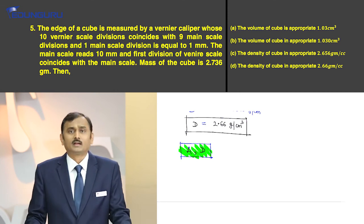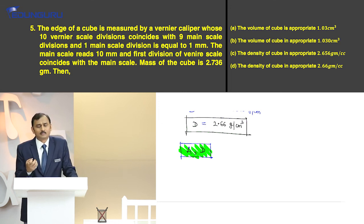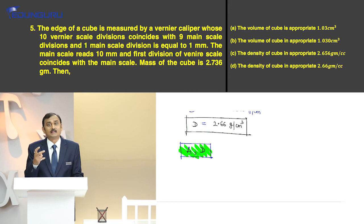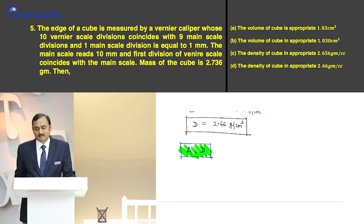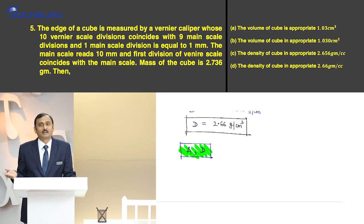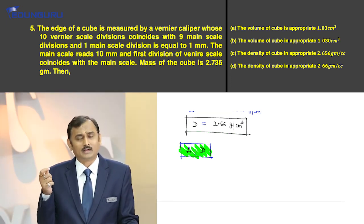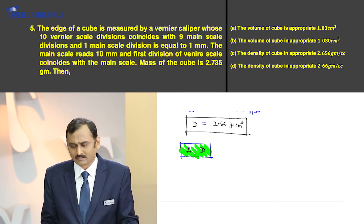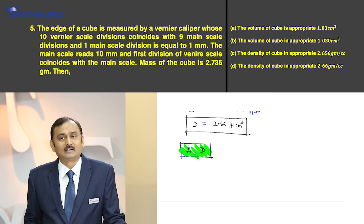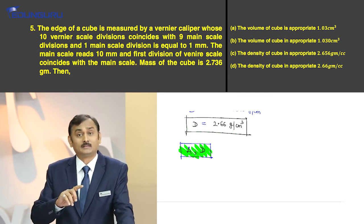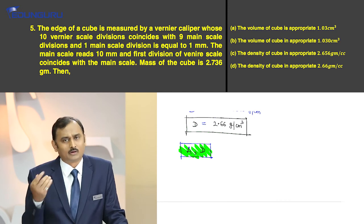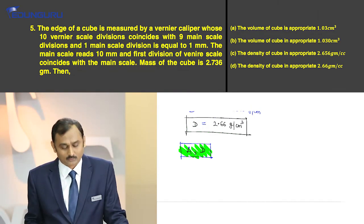Please remember that this question may seem easier, but it is of moderate difficulty level because there are calculations involved that will consume your time, and you have to constantly keep in mind the number of significant figures. In options C and D you can see 2.656 and 2.66 g/cm³ — if you don't pay attention to significant figures, you may choose wrong options. So this is what you have to keep in mind.